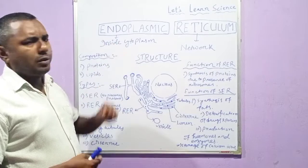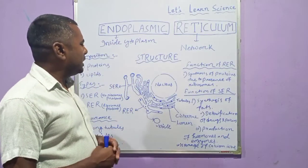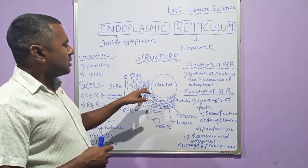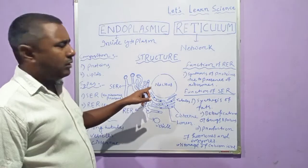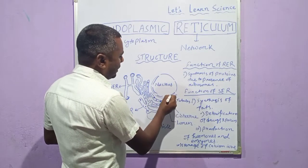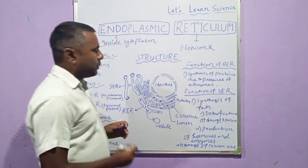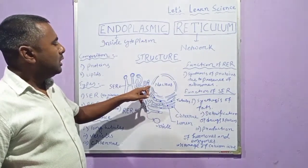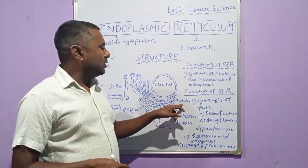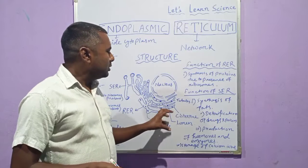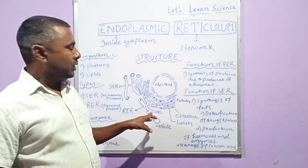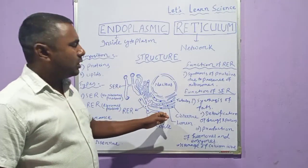Now let us see the structure of the endoplasmic reticulum. When you see it under the microscope, you will be able to see that the endoplasmic reticulum is attached from the outer nuclear membrane to the cell membrane. It is found in three forms: tubules, vesicles, and cisternae.